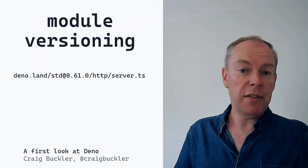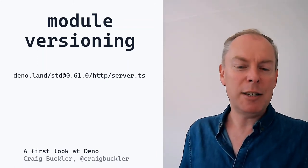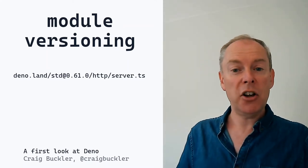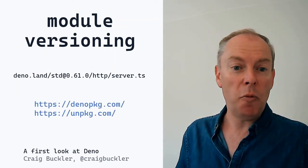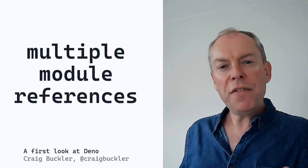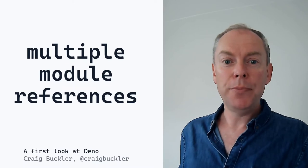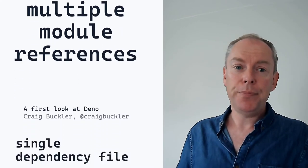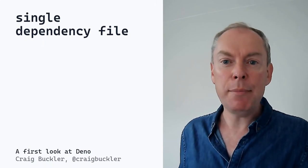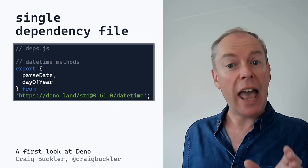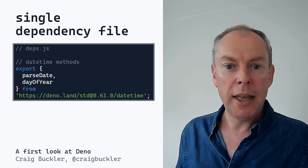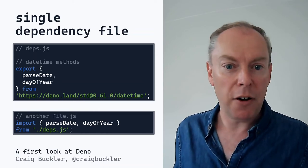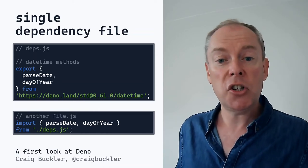You could release modules on your own server, but your site could receive a ton of traffic as it becomes popular. A more robust method is to use GitHub and assign a tag to every release, then reference a tagged version using sites such as DenoPKG.com or UnPKG.com. If you're importing the same module in dozens of places, updating URLs would require search and replace across every reference. One solution is a dependencies file, typically named deps.js, containing a single reference to every module used throughout your project. In your other files, you then import module functions from that dependency file.